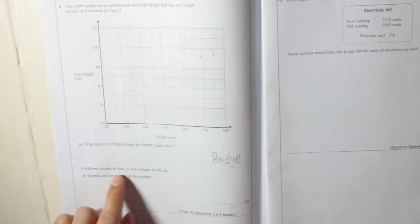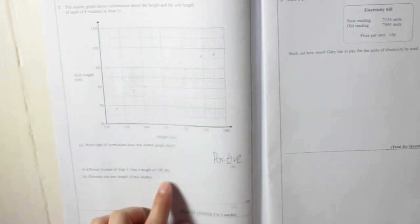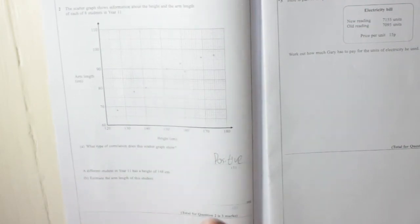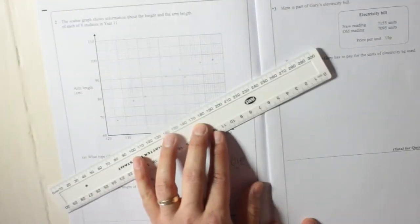A different student in Year 11 has a height of 148cm. Estimate the arm length of this student. So what you need to do for that is draw a line of best fit.